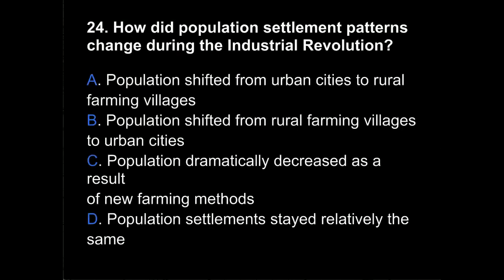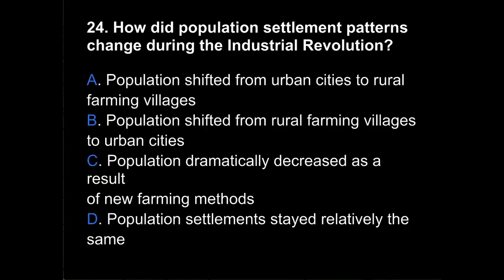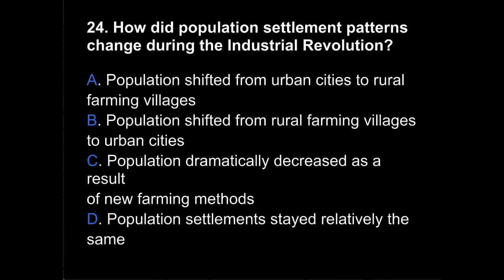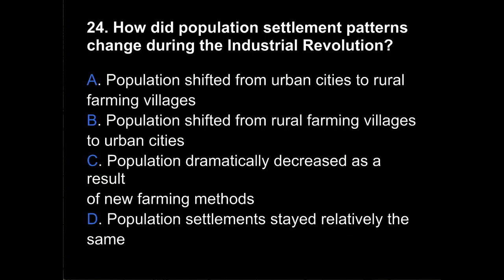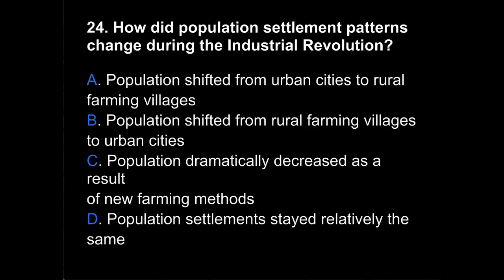Question 24. How did population settlement patterns change during the Industrial Revolution? A, population shifted from urban cities to rural farming villages? B, population shifted from rural farming villages to urban cities? C, population dramatically decreased as a result of new farming methods? Or D, population settlements stayed relatively the same?